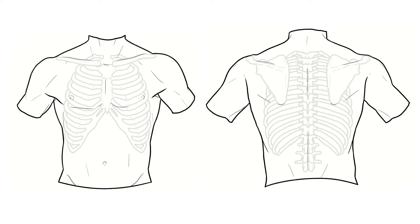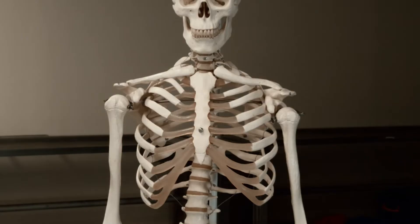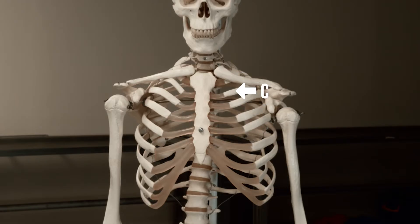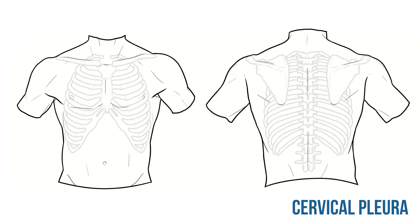The parietal pleura is split into different sections depending on what it's in contact with. Superiorly we have the cervical pleura, and people are often surprised at where this pleura actually finishes. How far do you think this pleura extends superiorly? Actually, that pleura extends around 2-3cm up above the clavicles.